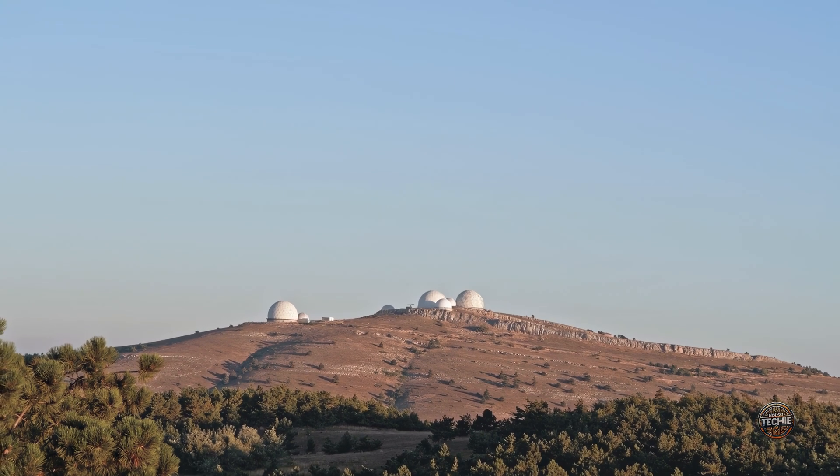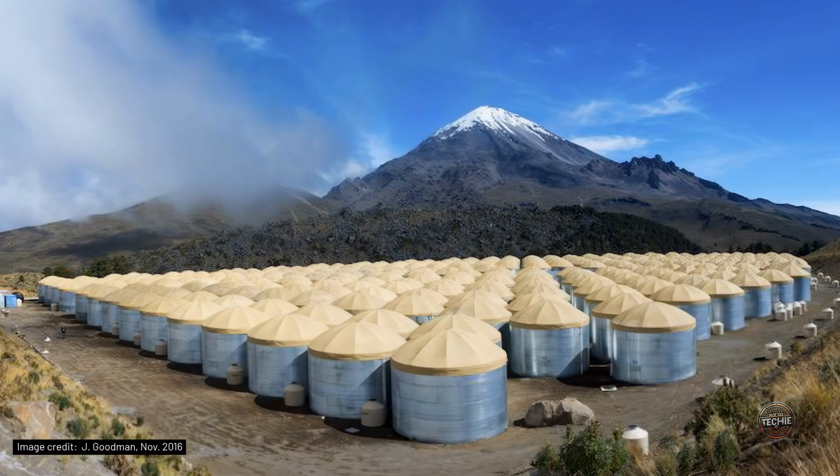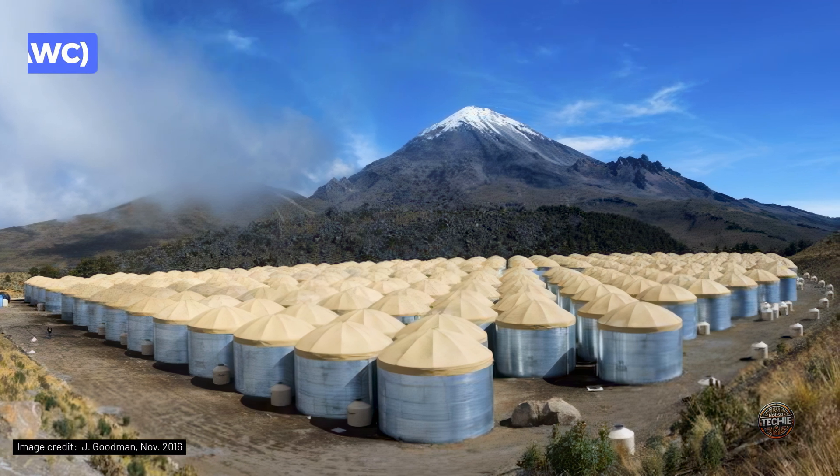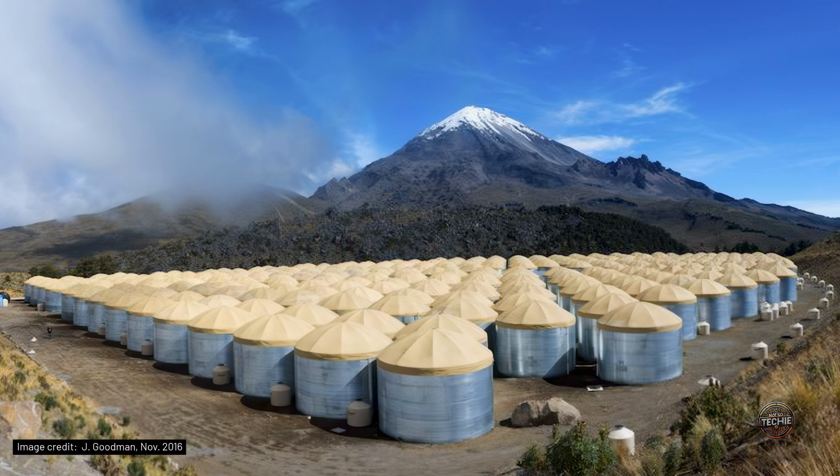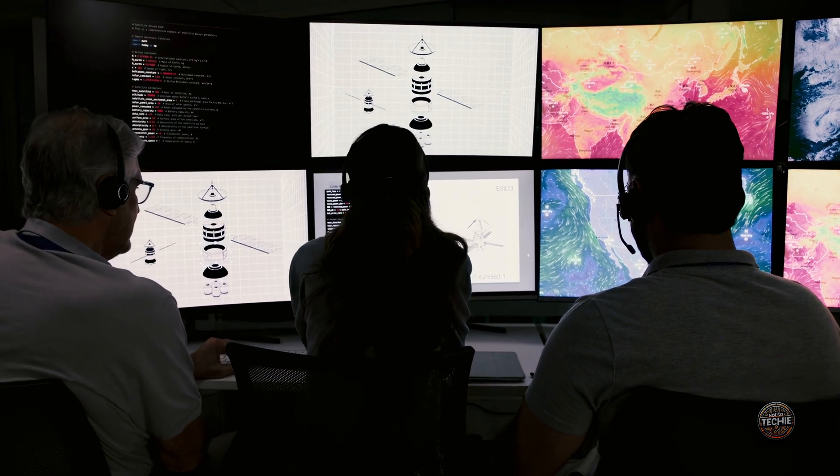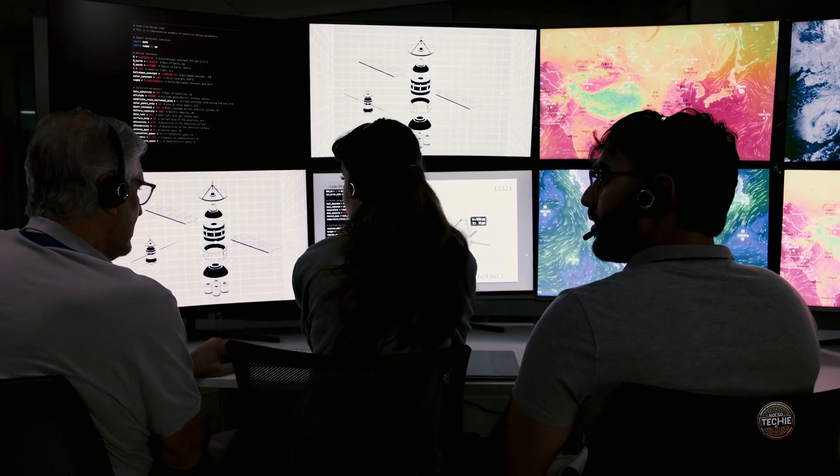Meanwhile, other observatories take a more cautious approach. The High Altitude Water Cherenkov Observatory, HAWC, in Mexico, often pauses data collection during severe weather to avoid contamination. This practice underscores the lengths to which scientists go to ensure the integrity of their measurements.